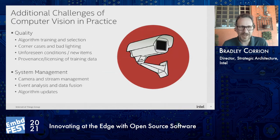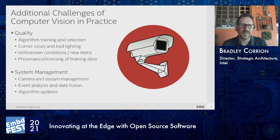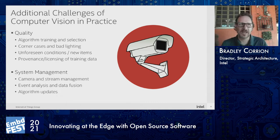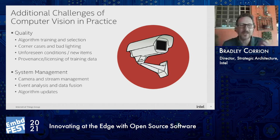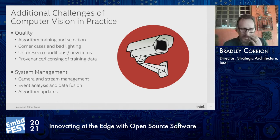There are a couple of key pain points. Computer vision quality is one of the biggest challenges — you need a good algorithm, good training data, and you have to understand corner cases. If someone says they trained a model that worked on the first try, ask: did you try it at sunset? At sunrise? On a cloudy day? Reflections and glare at eight in the morning are different than at two in the afternoon. These corner cases can be really challenging for teams to work through.